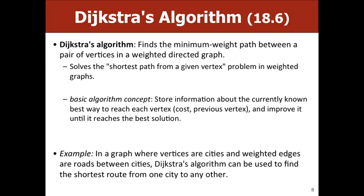The basic premise is: every time we see a new vertex, we compute its cost in terms of the previous vertices we've seen. Instead of blindly queuing neighbors like BFS, we keep track of the edge costs to get to those neighbors. As we go through the algorithm, we update those costs and eventually find the least cost path.